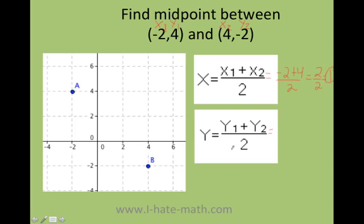Then here, I'm going to do the same thing, 4 plus, but remember, y2 is negative 2. Now, 4, positive times negative, is just a negative. So I just get 4 minus 2, which is 2 over 2.